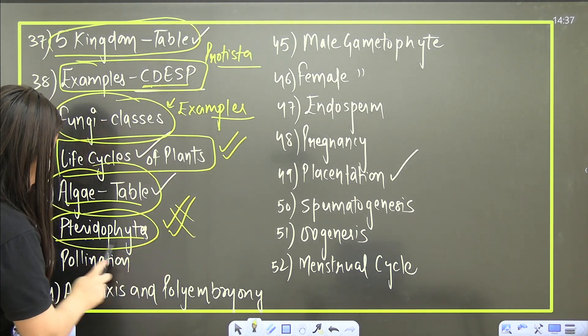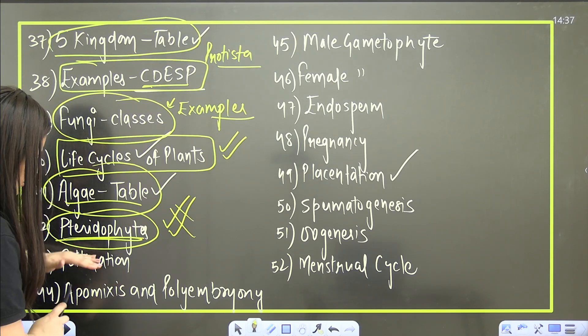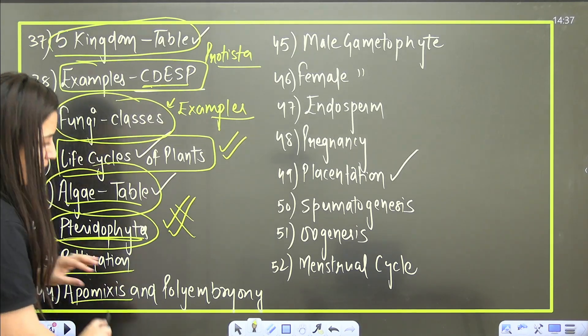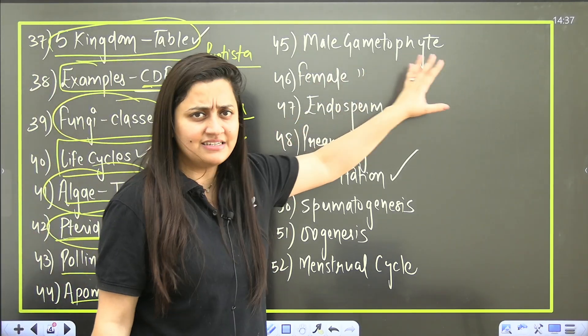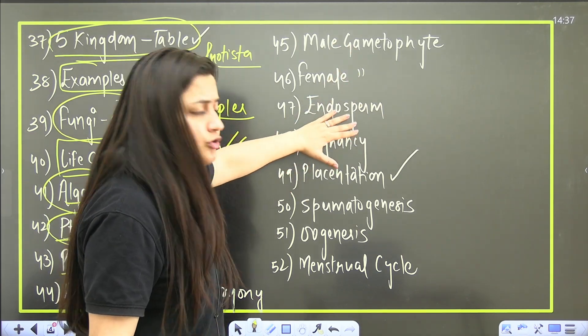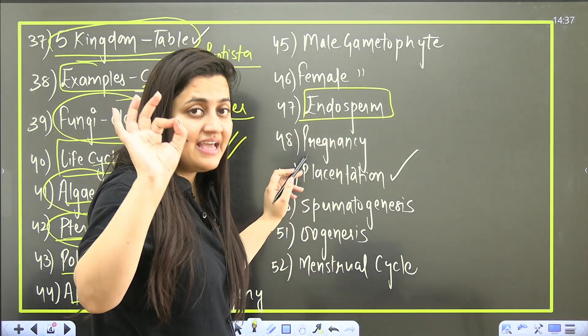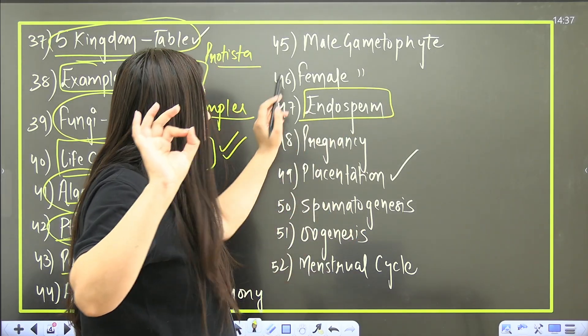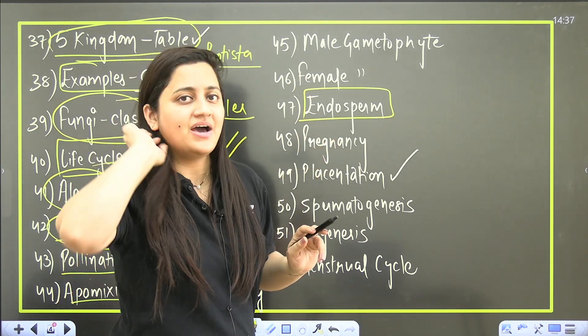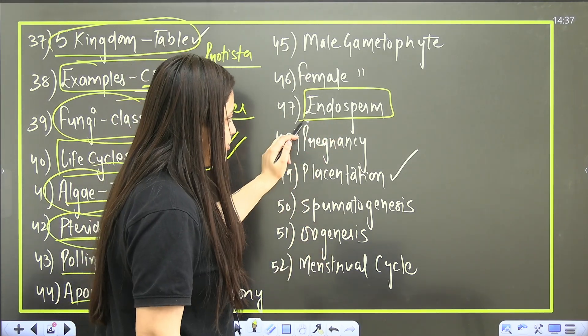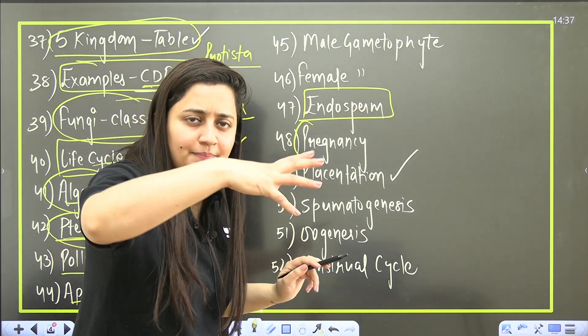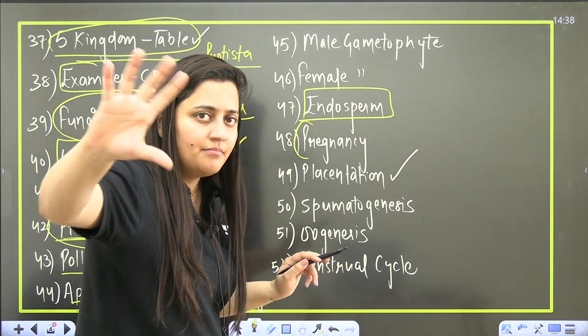Algae - that table is for sure you have to complete this table. Then pteridophytes - this time please pay attention on the pteridophytes. Then now class 12 syllabus - pollination, apomixis, polyembryony, gametophyte development male and female both. Endosperm - individually you should know about it. Do not miss apomixis part, do not miss your endosperm comparison part for this particular year.